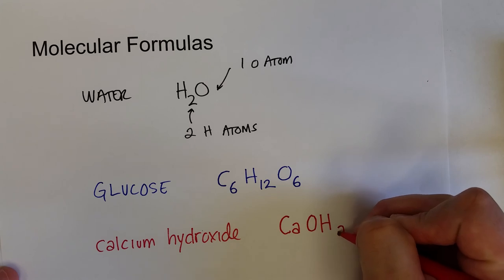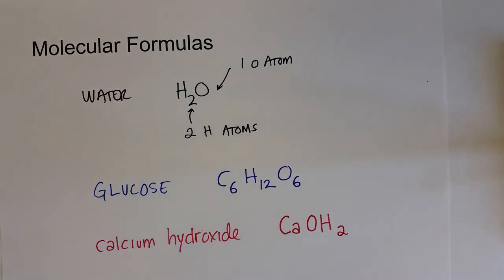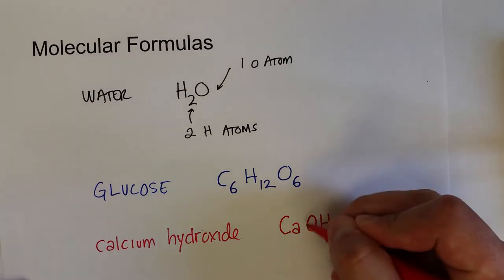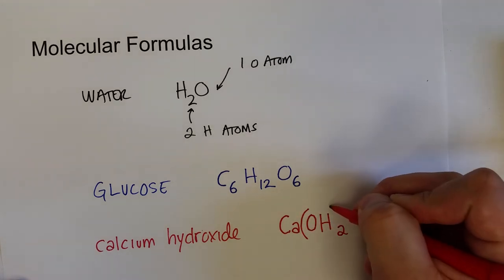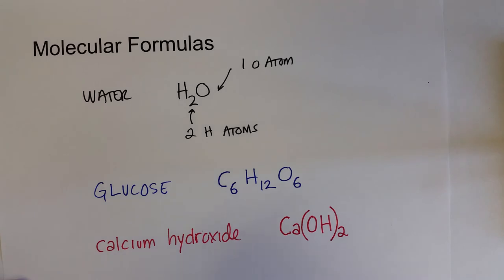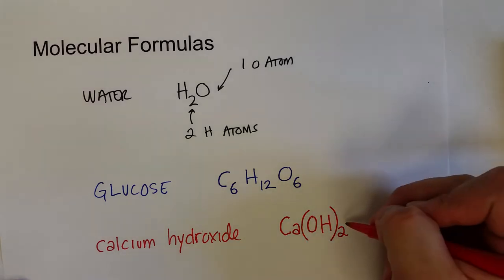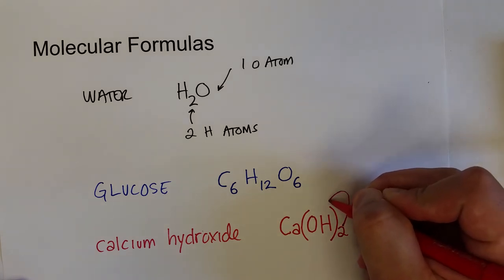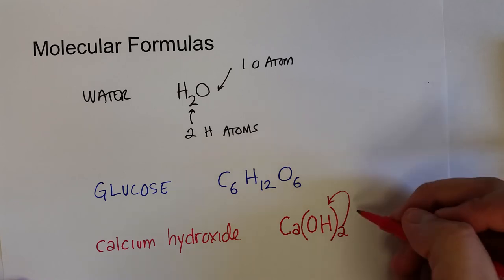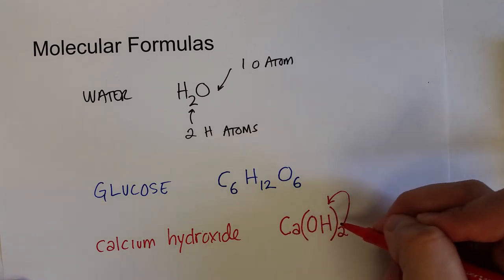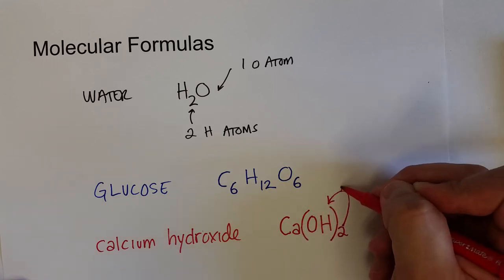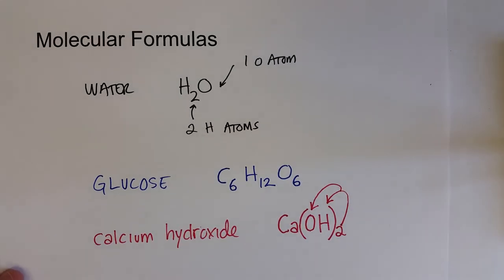Now, if we were to just write CaOH2, you might look at this formula and think that there's one calcium atom, one oxygen atom, and then two hydrogens. But it turns out there's two hydroxides, which is OH, and so we need to show a parentheses around that hydroxide. So now we know that there are two hydroxides and one calcium. So in terms of this, we just basically factor in this subscript on the outside of the parentheses. So each calcium hydroxide compound has one calcium, two hydrogens, and two oxygen atoms.